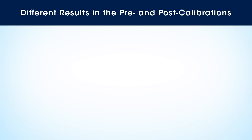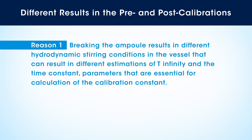Usually the pre and post calibrations give somewhat different results. One reason is that breaking the ampoule results in different hydrodynamic stirring conditions in the vessel, which could result in different estimation of the T-infinity and the time constant. These parameters are essential for calculation of the calibration constant, and for this reason the post calibration is a better representation of the dissolution process.